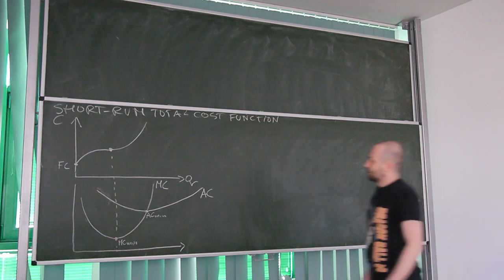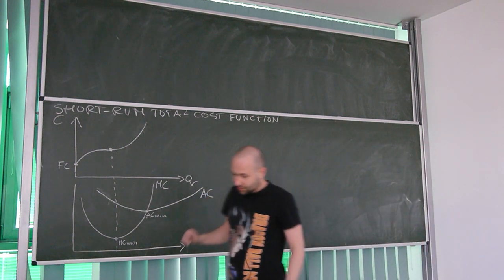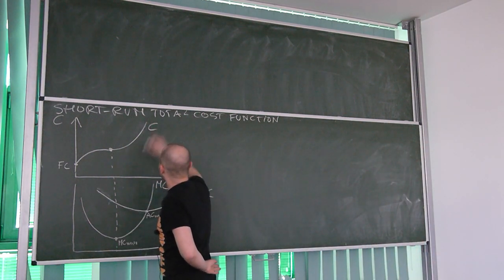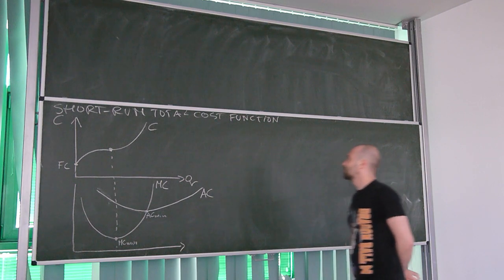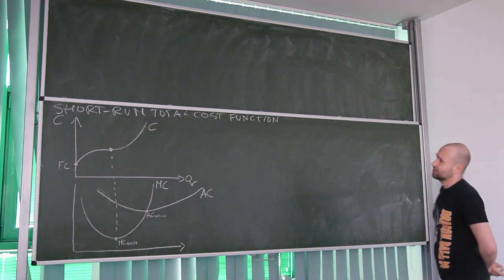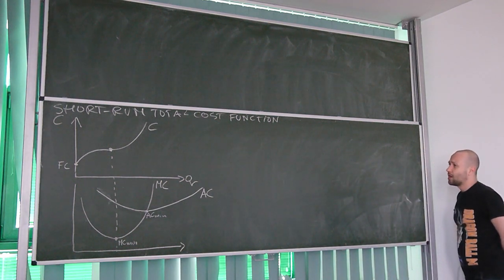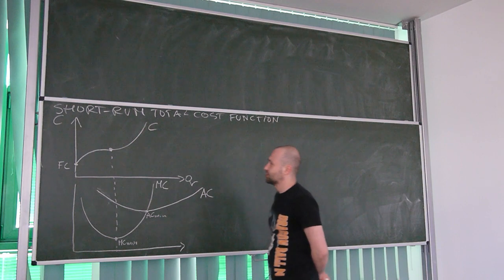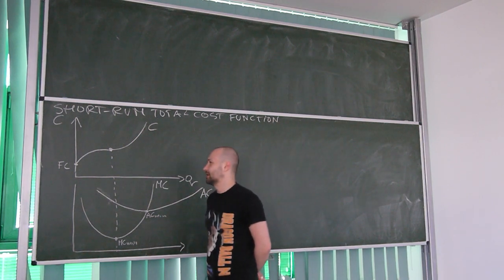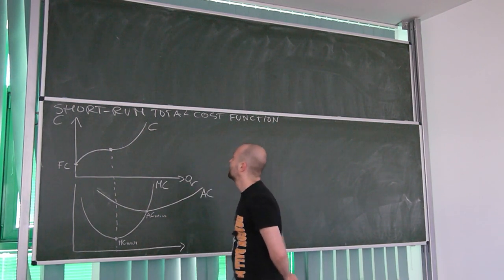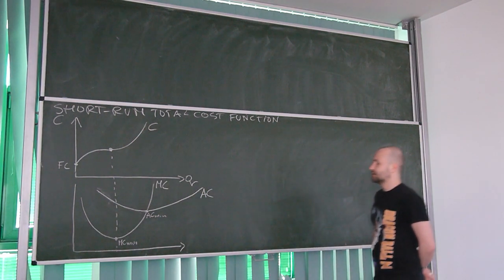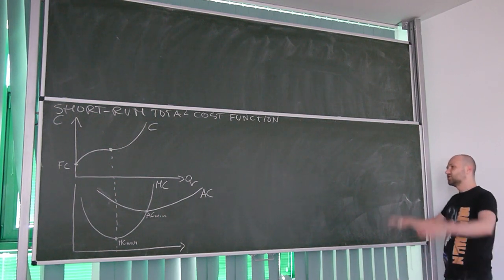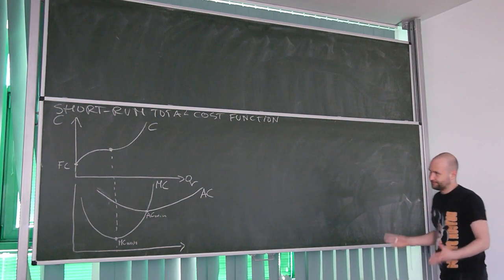Hi. What you can see over here is the short-run total cost function, the one that you've been learning about during your introduction to microeconomics class. Let's just review what you've learned.